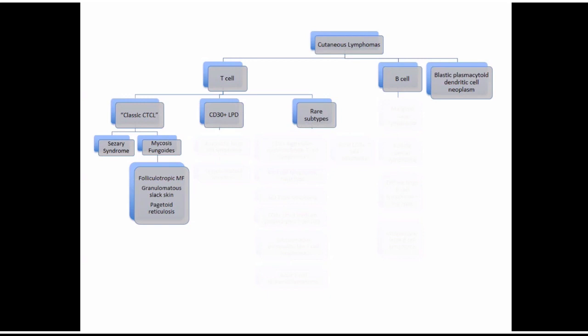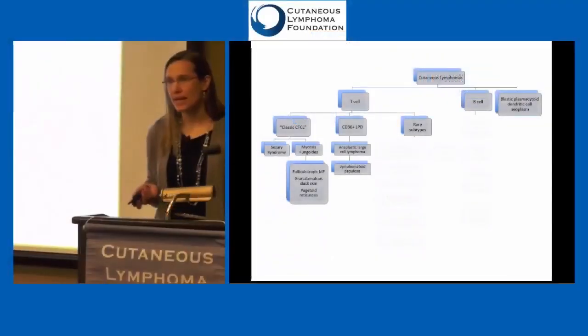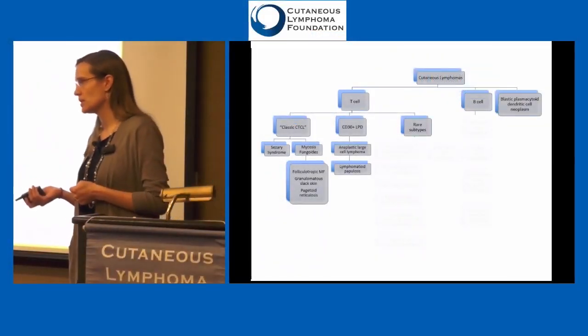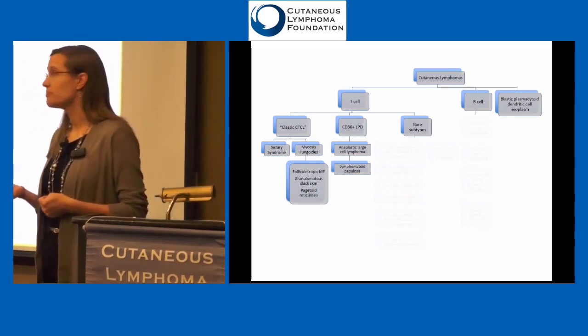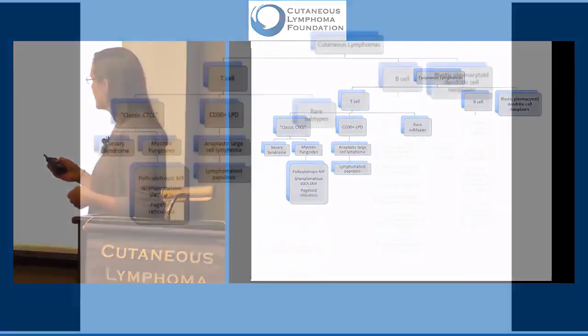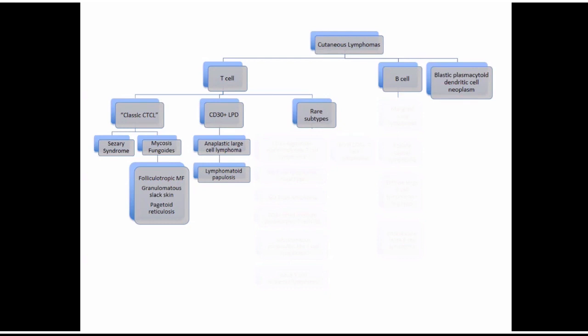Pagetoid reticulosis is another subtype where you have just one area of mycosis fungoides. The next bucket is CD30 positive lymphoproliferative disorders, with two main types: anaplastic large cell lymphoma (ALCL) and lymphomatoid papulosis (LYP). This group is defined by that CD30 marker the cells express on their surface. This subgroup has a different staging system and is treated differently than mycosis fungoides.